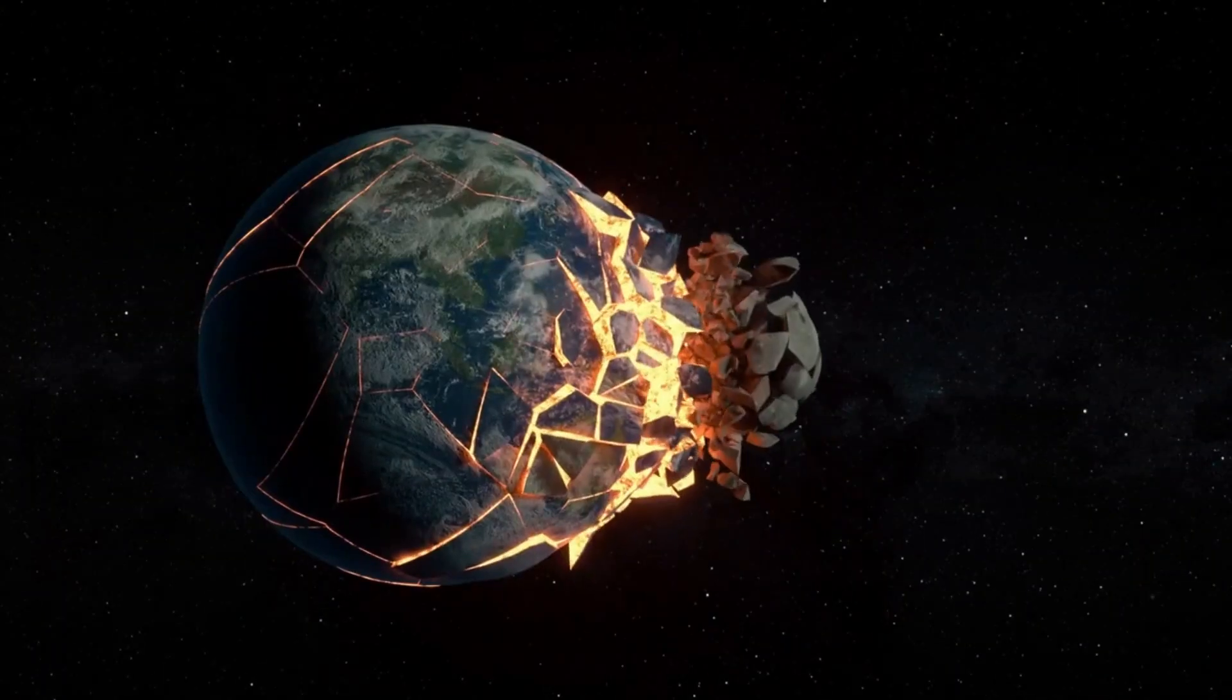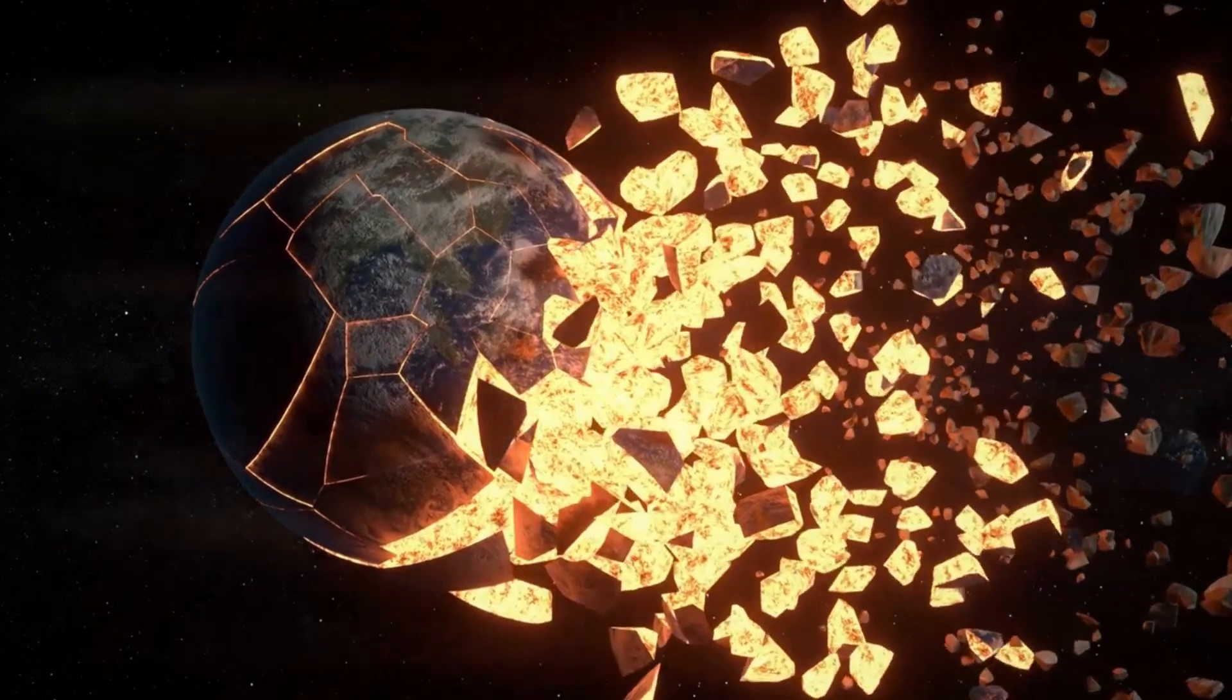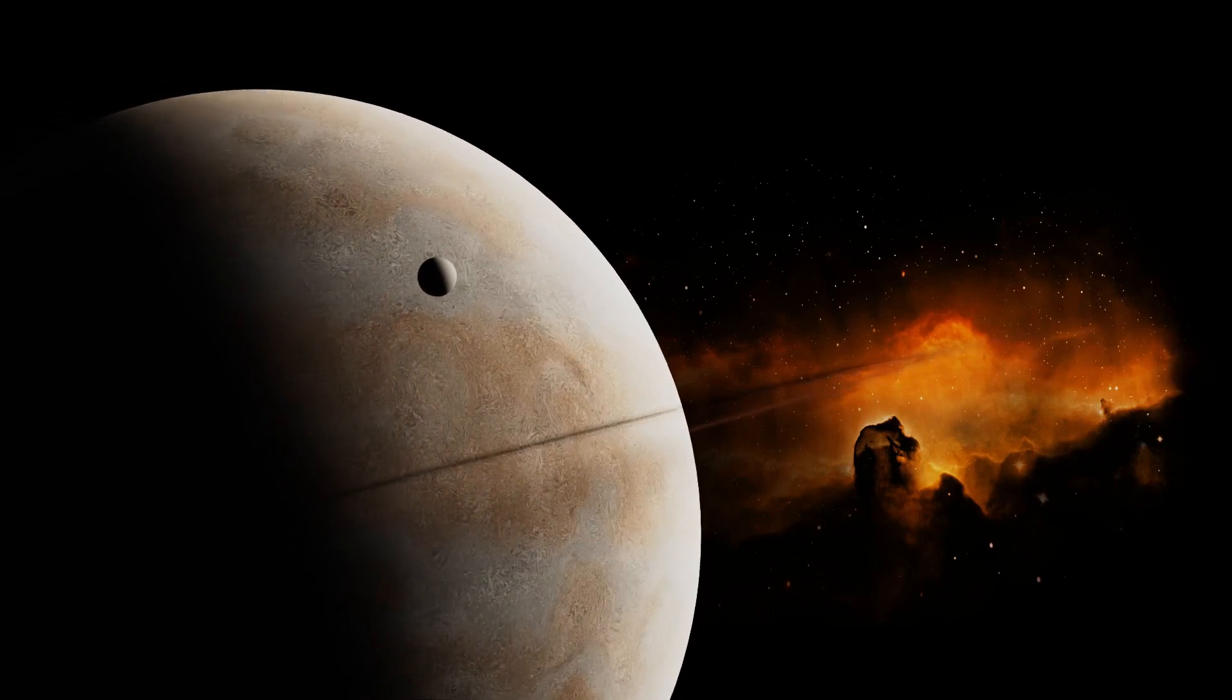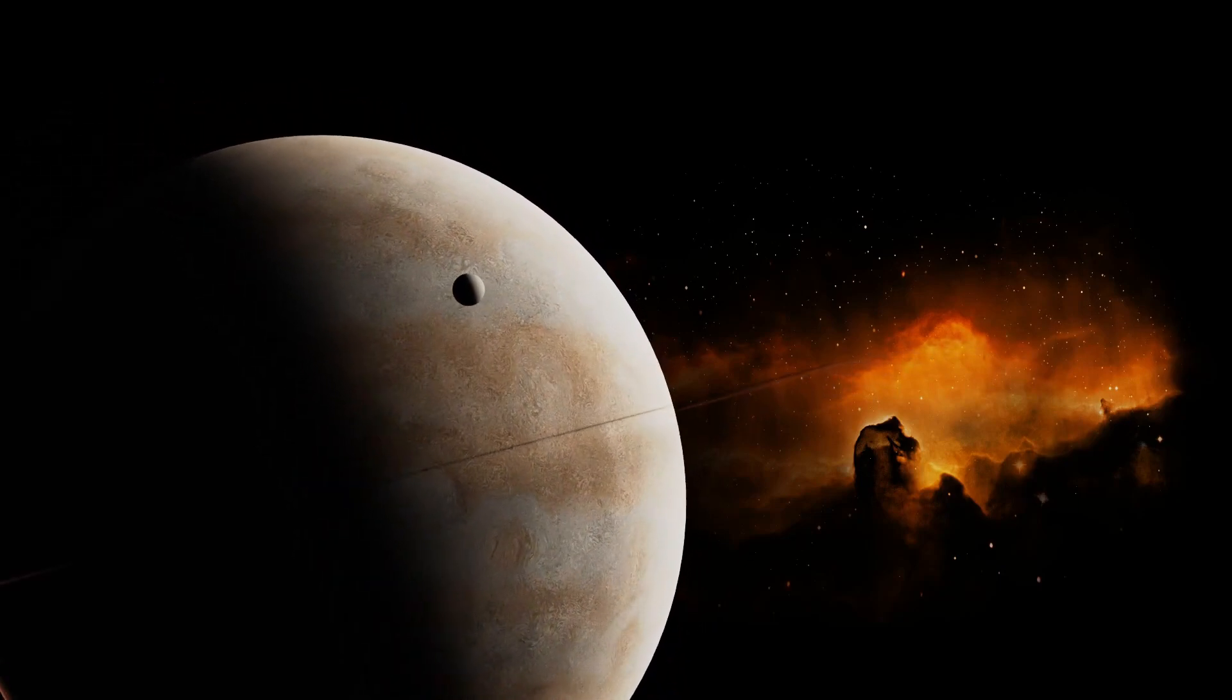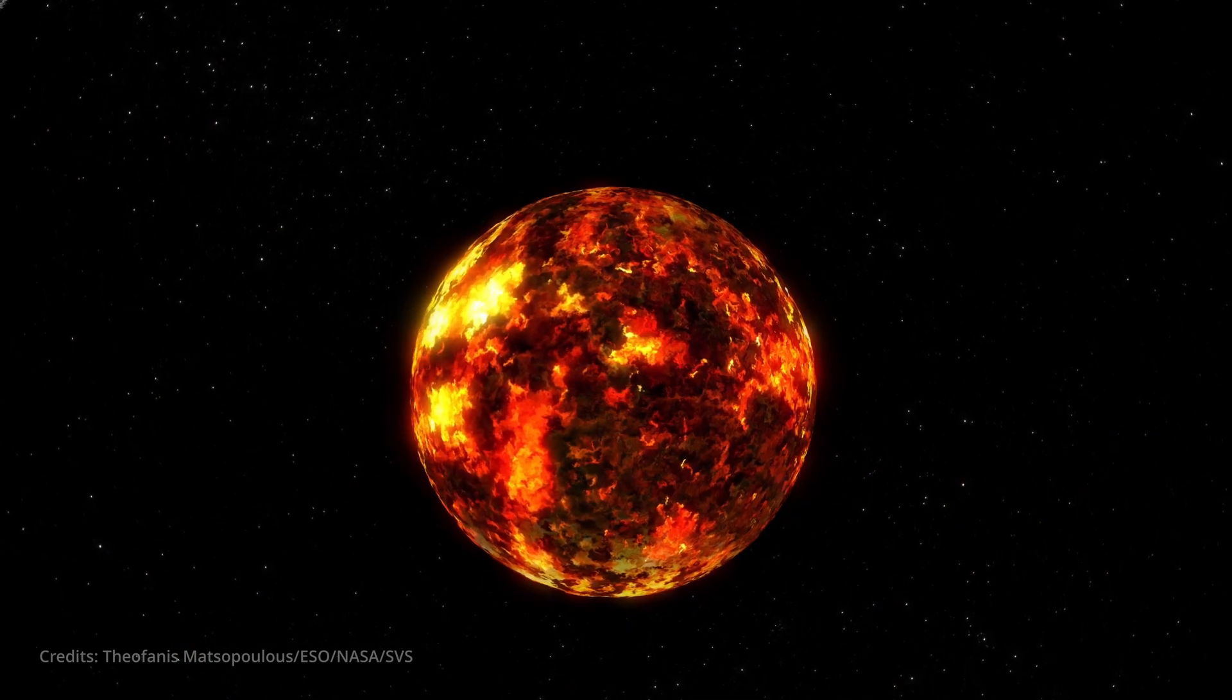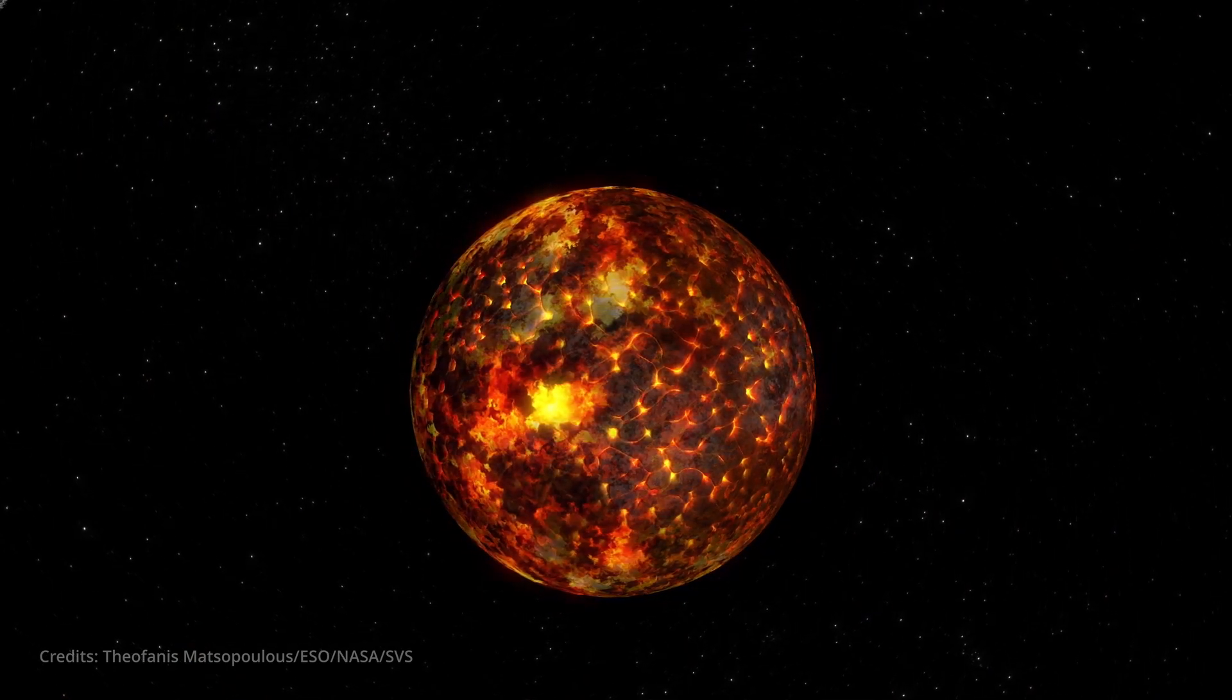Theia crashed into Earth, obliterating itself and much of the Earth in the process, blasting the debris into space. The debris then formed rings around the Earth, much like Saturn has today. But eventually the rings coalesced into what's now known as the Moon. All of this happened some 4.6 billion years ago.